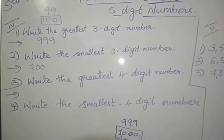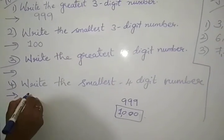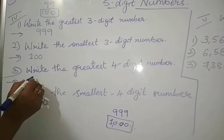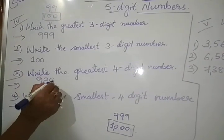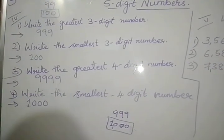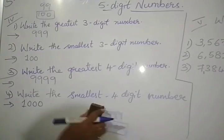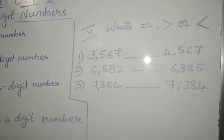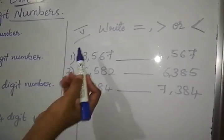So smallest number, 1,000, then greatest number, 9,999, 4-digit number. So here we go for 5th Roman, compare the numbers.